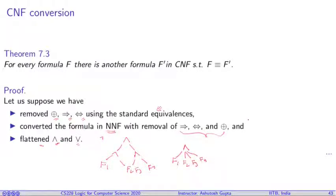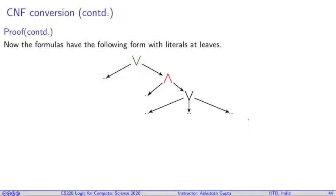After this transformation, the formula looks like this: it will have a sequences of disjunction, conjunction, disjunction, conjunction, alternating. And at the very end, you will have literals where maybe a variable can be P, not P, or Q.